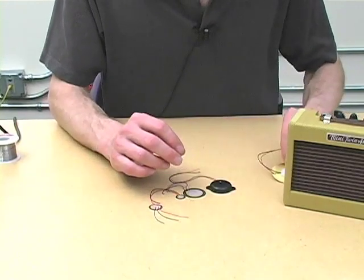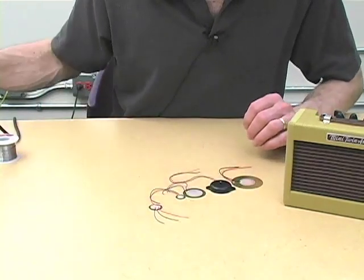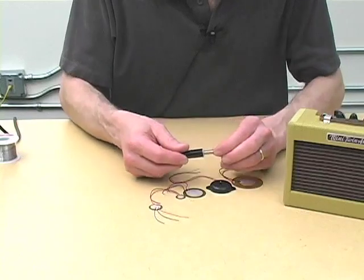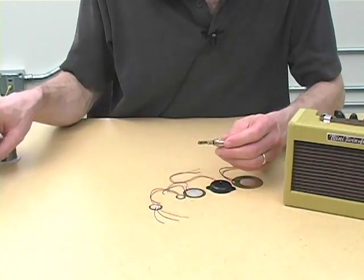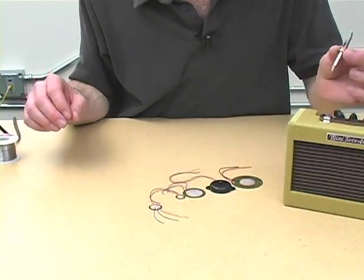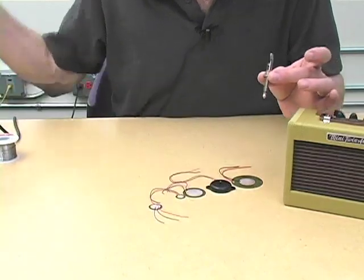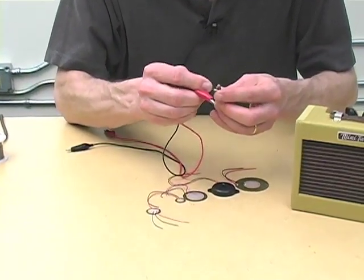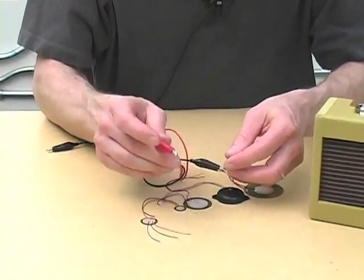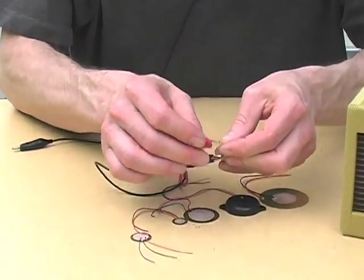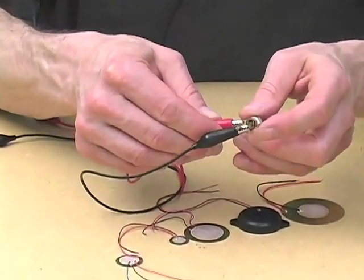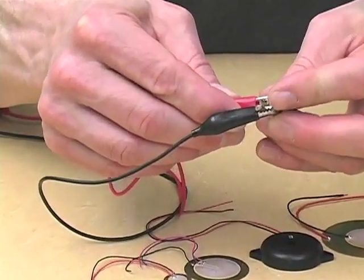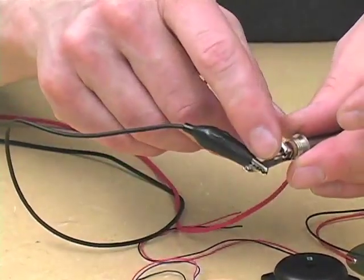So, piezo discs come in all different sizes and in order to hear one in action, what we need to do is connect one to an amplifier. So here I have a plug that fits my amp. I'm going to connect a black clip lead to the long lug of this, which is the ground, or sleeve.